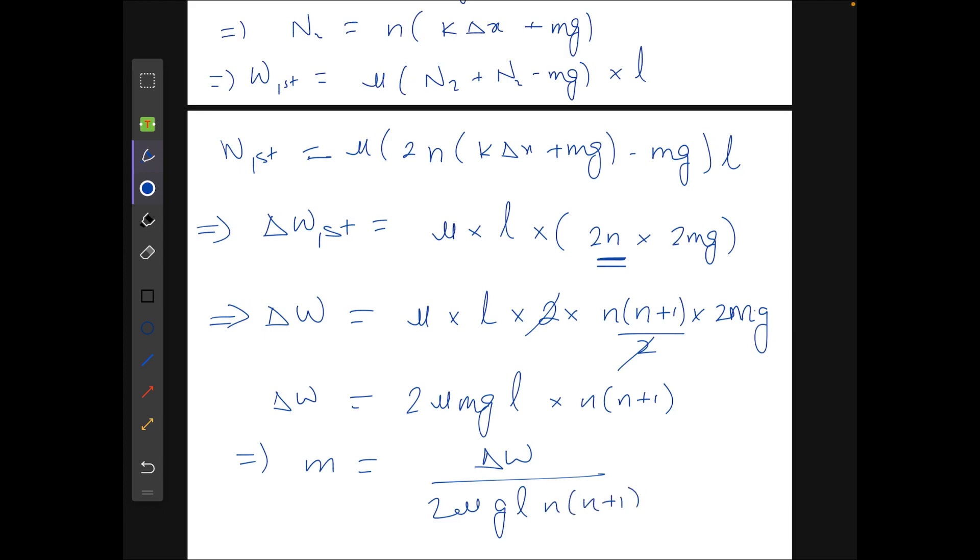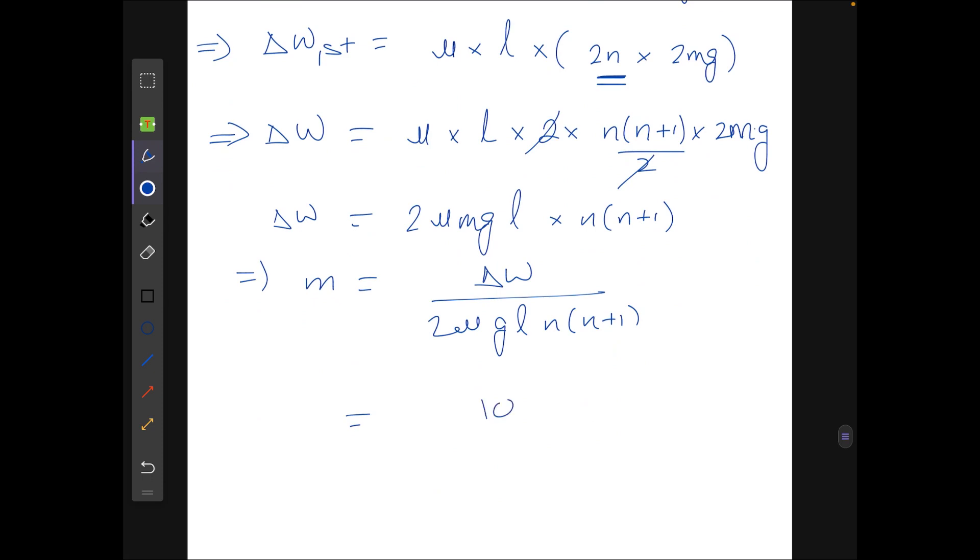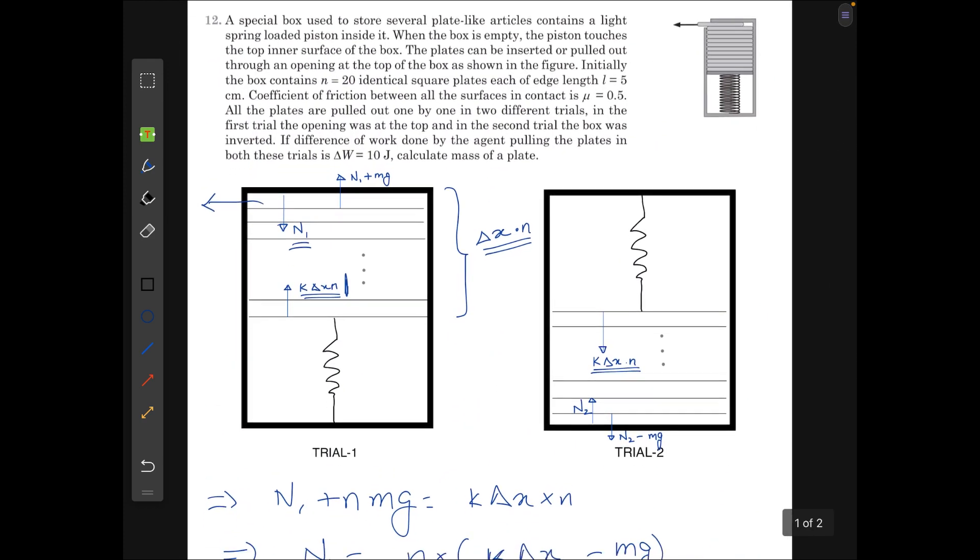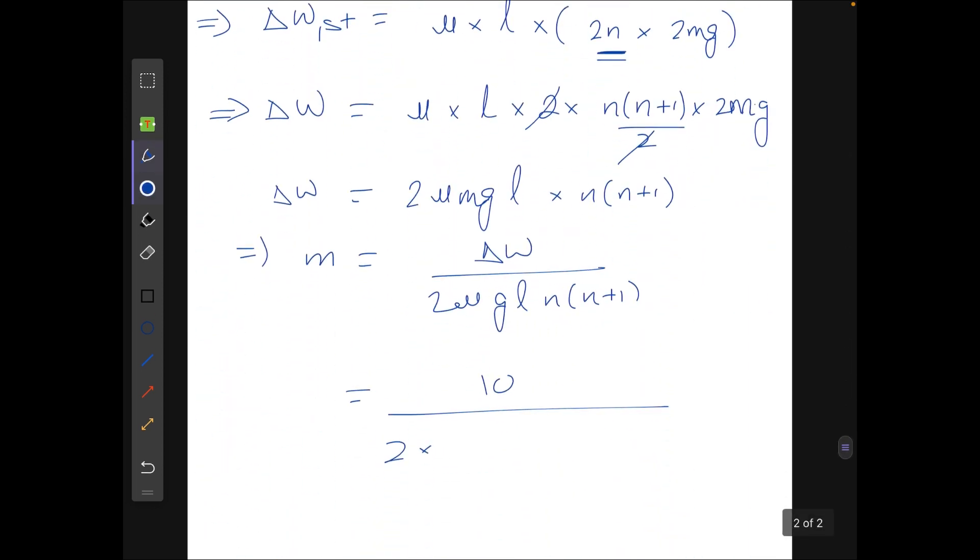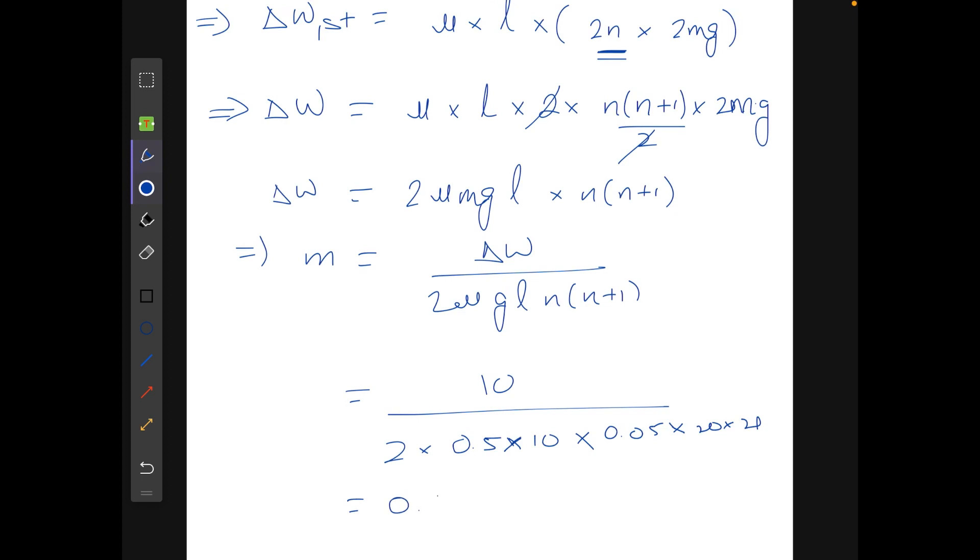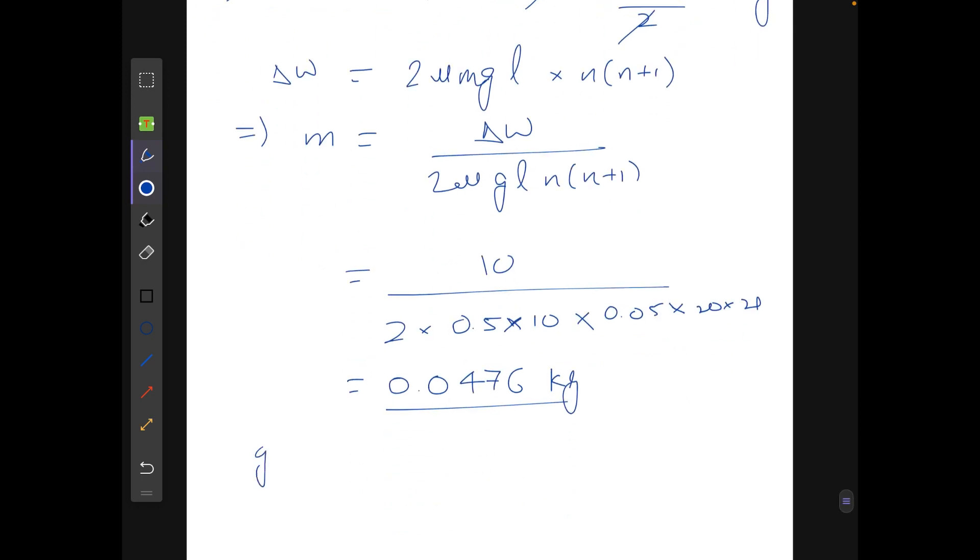So substituting all the values here, we get that delta w is 10 joules, mu was 0.5, l is 5 cm which is 0.05 m, and n equals 20. So substituting all the values here we get 2 times 0.5 times g is taken to be 10 here, and l is 0.05 times 20 times 21. So calculating this we get 0.0476 kg.